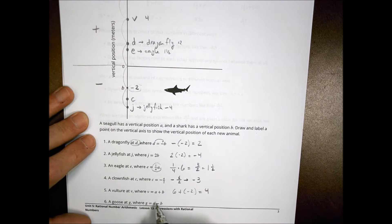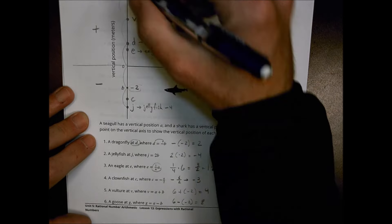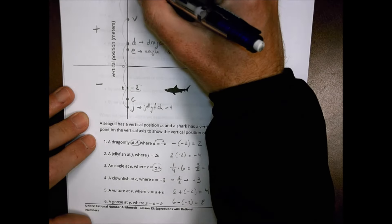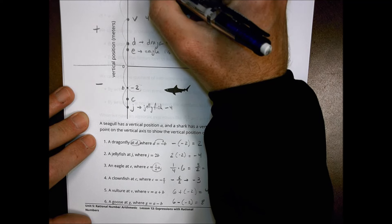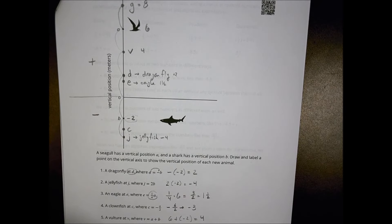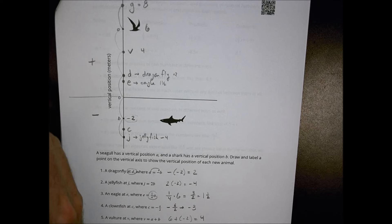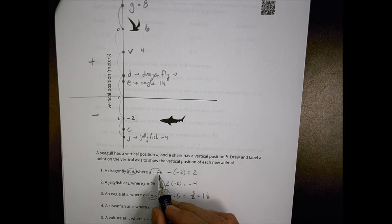The goose is at A minus B. With A equal to six and B equal to negative two, six minus negative two equals eight. So the goose goes two above the vulture, up to about positive eight. That's the idea of where all the animals land, and the key is to watch your signs to make sure you're placing them correctly.